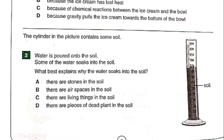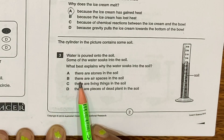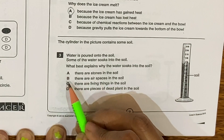Question three. The cylinder in the pitcher contains some soil. Water is poured onto the soil and some of the water soaks into the soil. What best explains why the water soaks into the soil? A. There are stones in the soil. B. There are air spaces in the soil. C. There are living things in the soil. D. There are pieces of dead plant in the soil. The answer is B: there are air spaces in the soil.